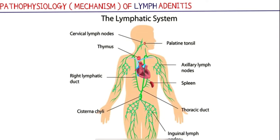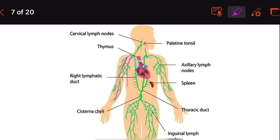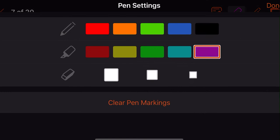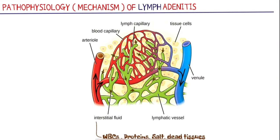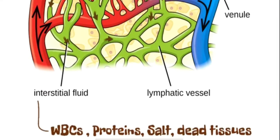In the pathophysiology, these lymph nodes are linked by lymphatic vessels. These lymphatic vessels carry the lymph throughout the body — through the axillary, cervical, and inguinal lymph nodes. The lymph is nothing but a clear fluid which contains white blood cells, protein, salt, and dead tissues.